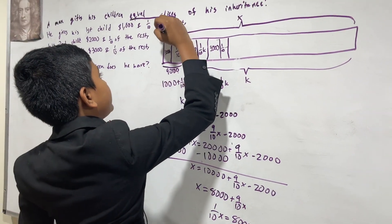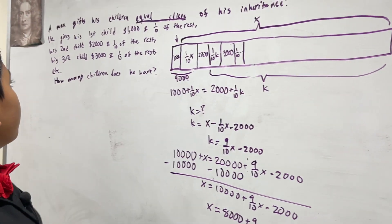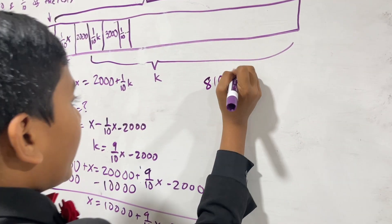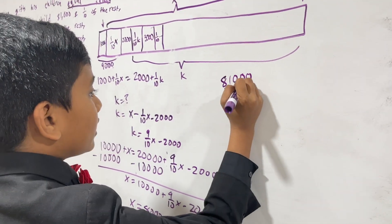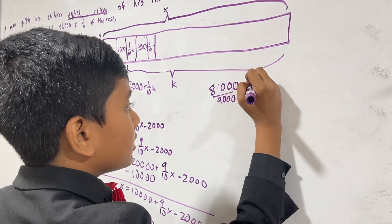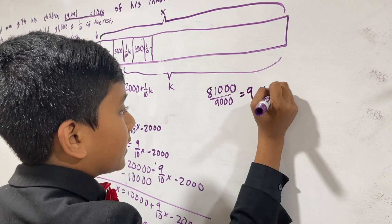But, with this extra one thousand that he gifted the first child, that means that the total amount of money the man had was eighty one thousand. When dividing it by the nine thousand that each of the children will get, because the first guy got that, then there are nine children of this man in total.